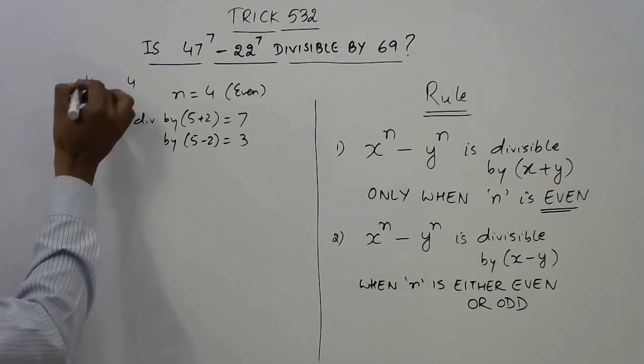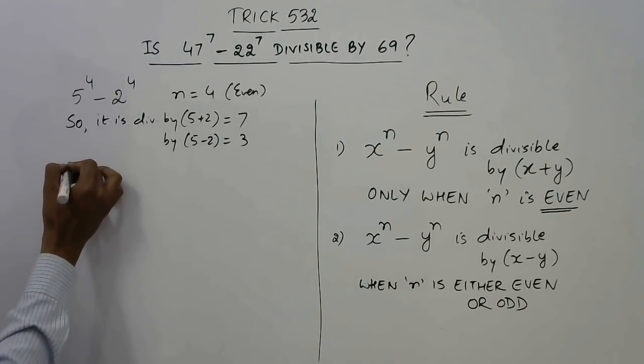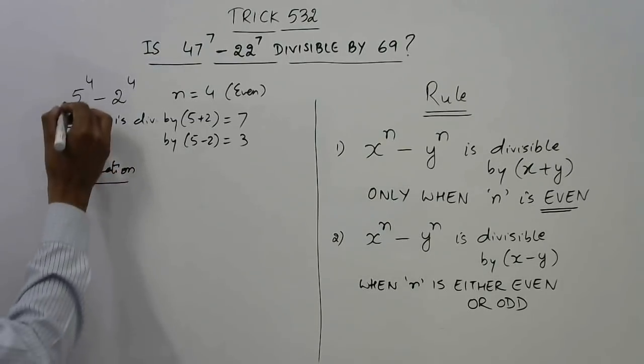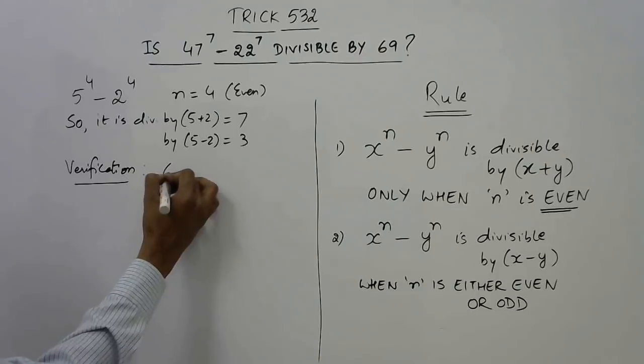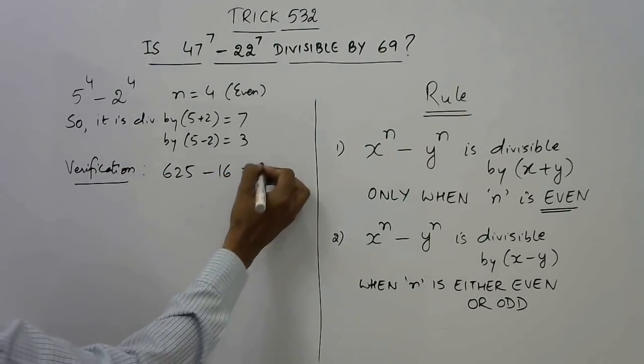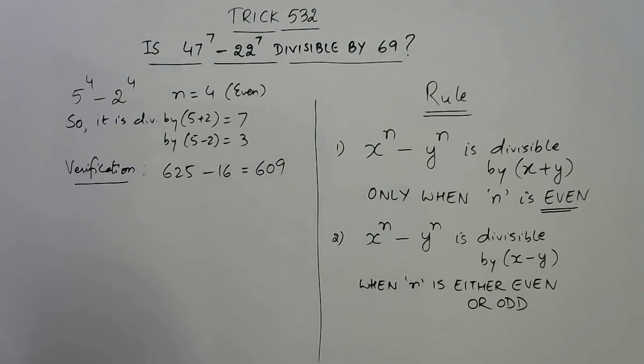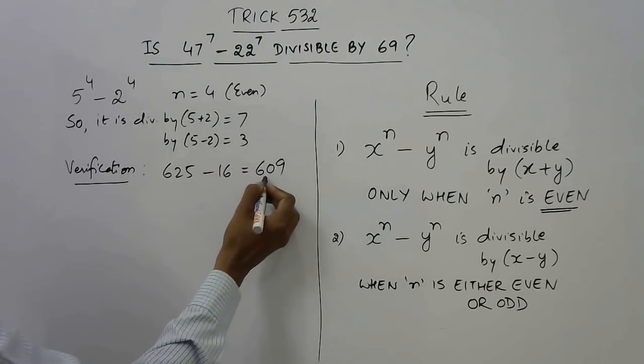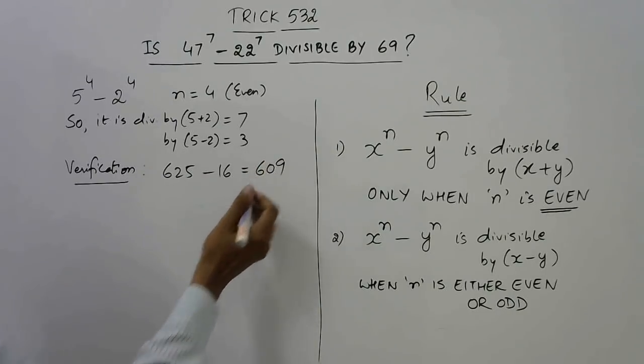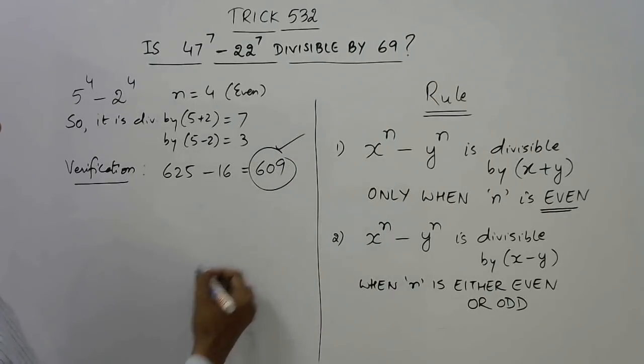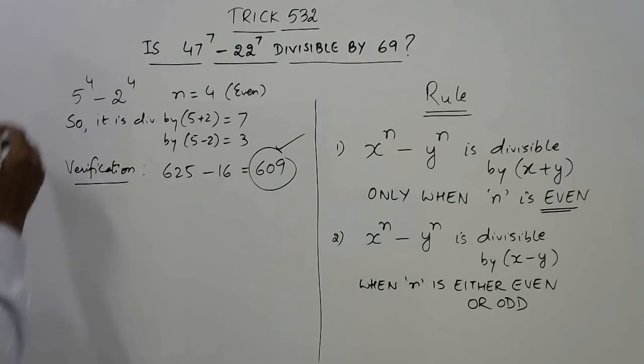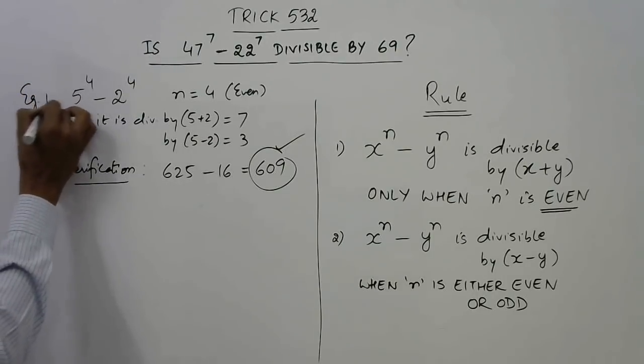Now let us check this. We are actually doing verification. So 5 raised to power 4 is 25 squared, 625, and 2 raised to power 4 is 16. If you take the difference, 625 minus 16 is 609. Just check divisibility by 7: 8 sevens are 56, 49, 7 sevens are 49. So it is divisible by 7 and divisible by 3 obviously because 6 plus 9 is 15. So this is a very simple example of this concept.